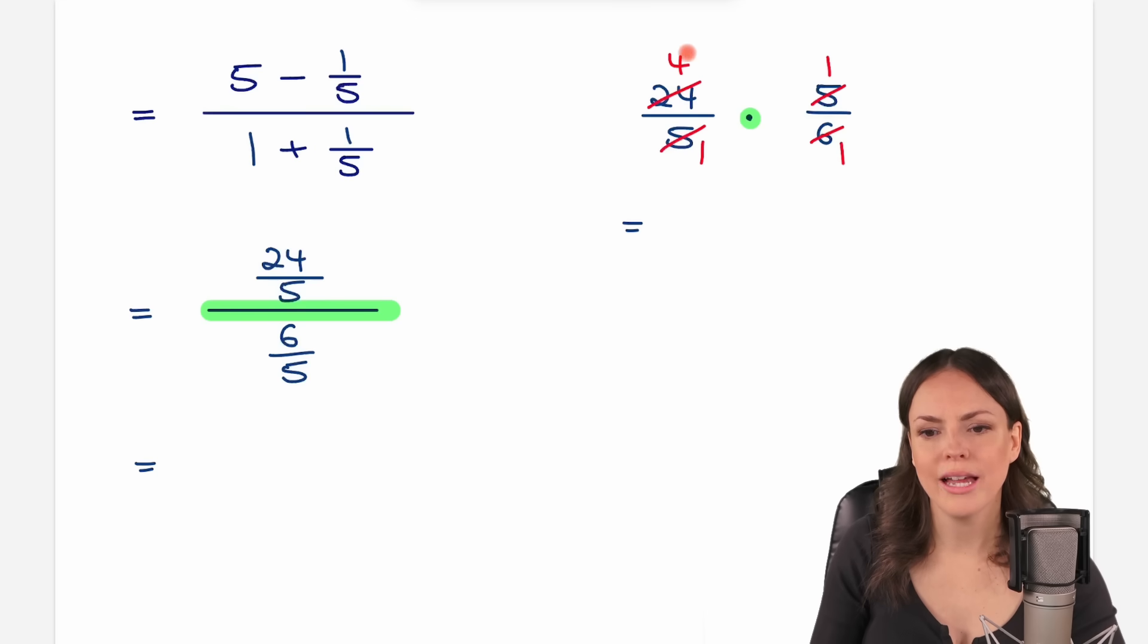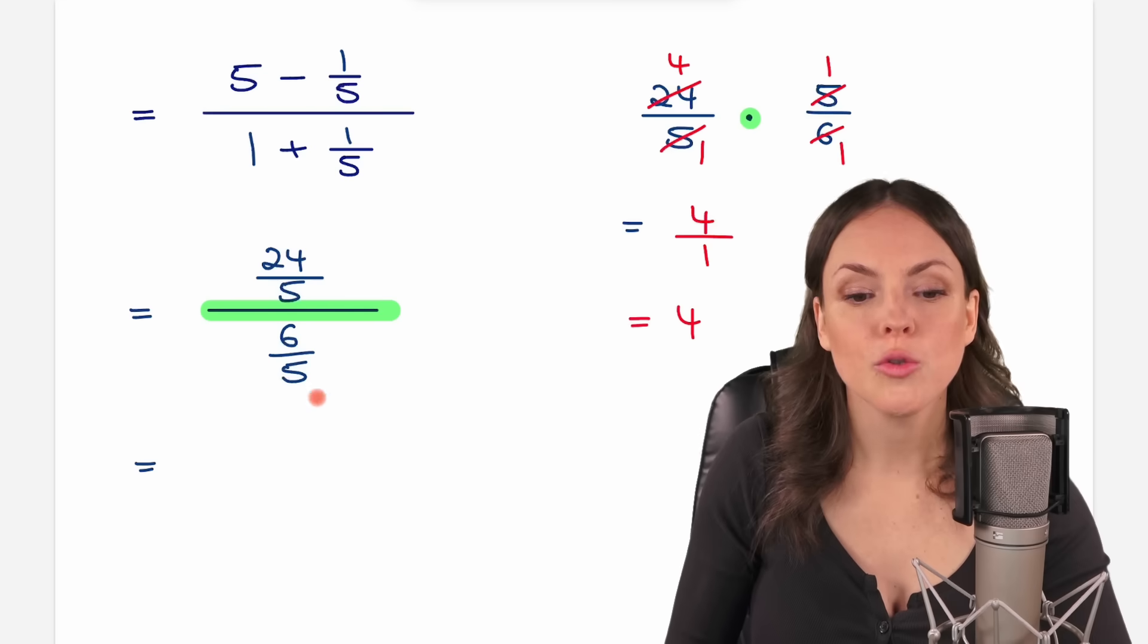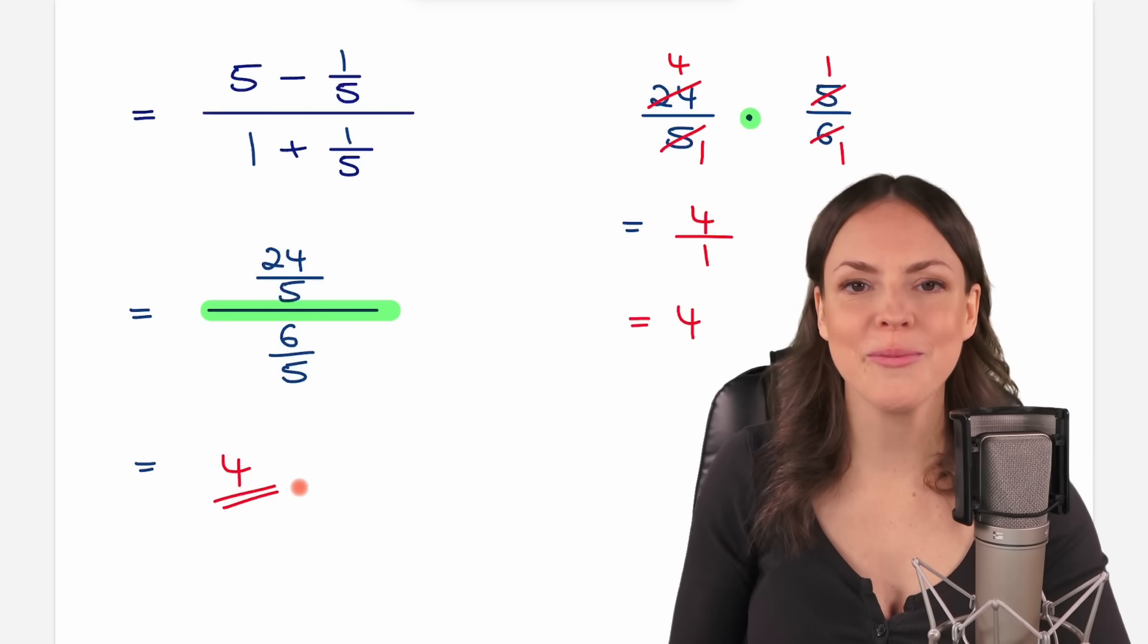So, we only have 4 times 1, which equals 4. And here we have 1 times 1, which equals 1. 4 over 1 is just equal to 4. So, in total, we have a result of 4, and we solved our problem.